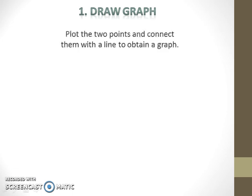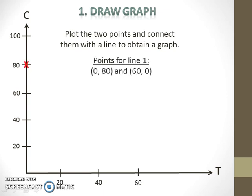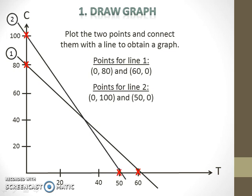Next, plot the two points and connect them with a line to obtain a graph. After the graph is drawn, the next thing to do is identify the feasible region.